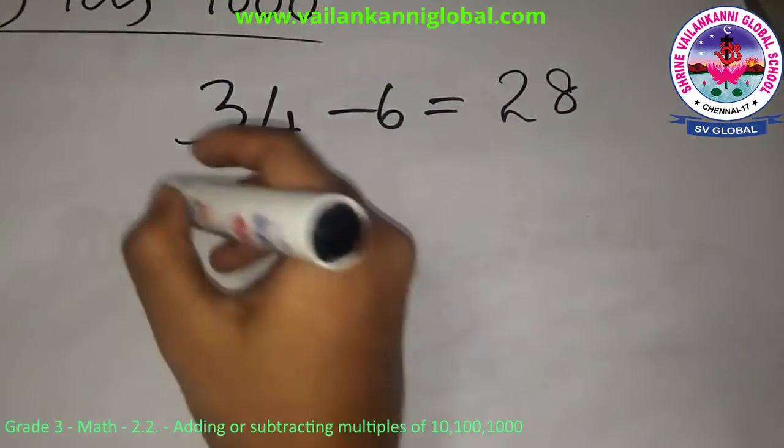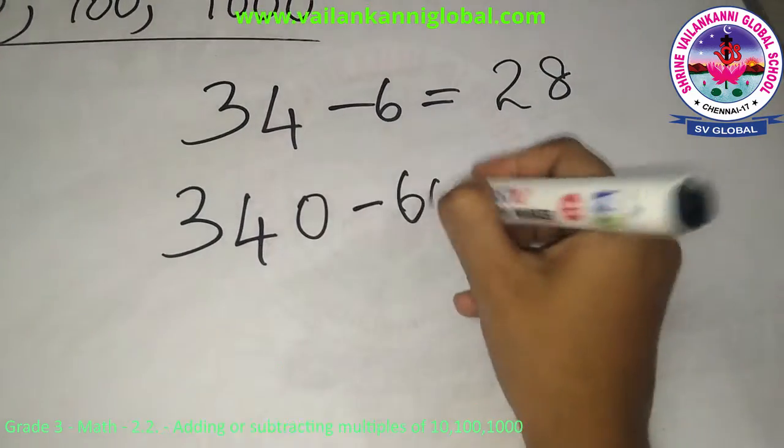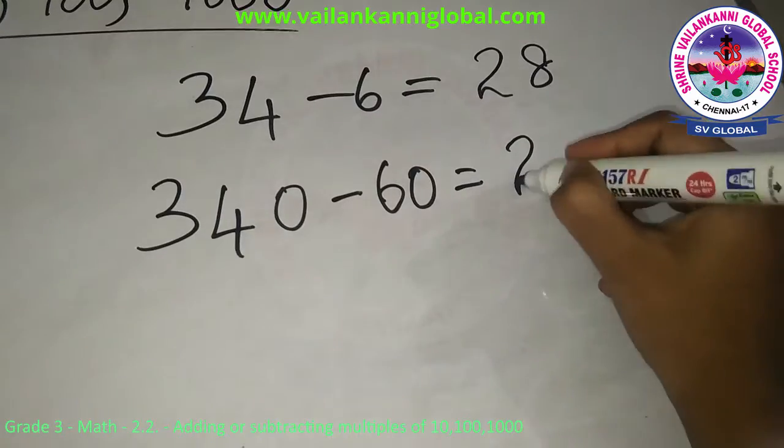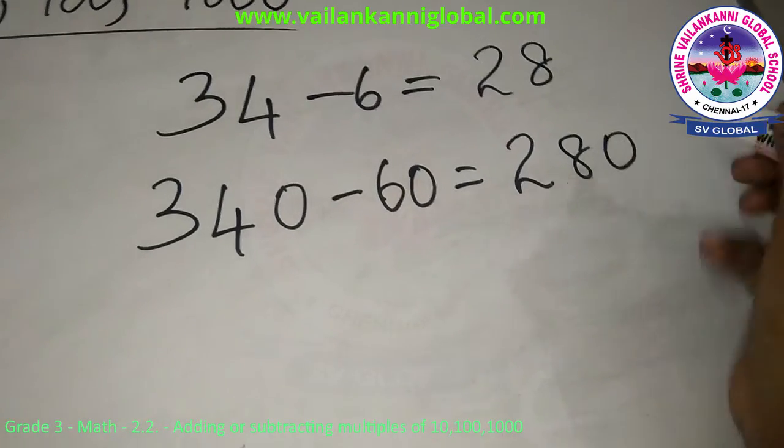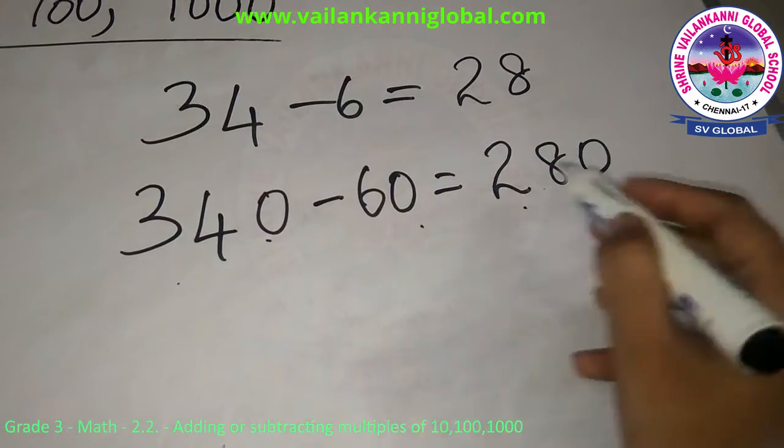So when I am adding zeros, 340 minus 60 becomes 280. 34 minus 6 is 28. I am adding this 0 towards the last.